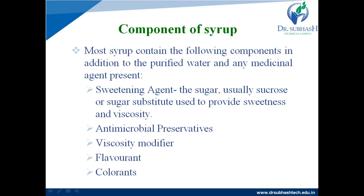Next is the antimicrobial preservative. The amount of preservative required to protect a syrup against microbial growth varies with the proportion of water available for microbial growth and the capability of the preservative itself. Examples of preservatives include benzoic acid and sodium benzoate. Syrup can be preserved by storage at low temperature or by adding a preservative such as methyl parabens or propyl parabens to avoid microbial contamination.